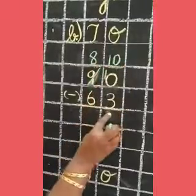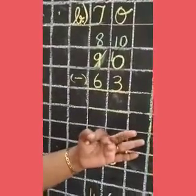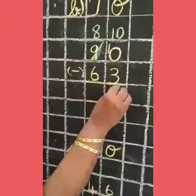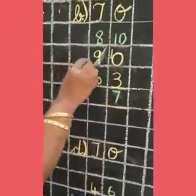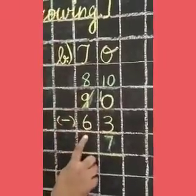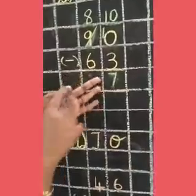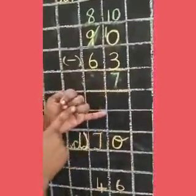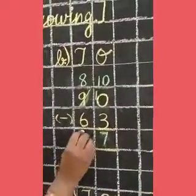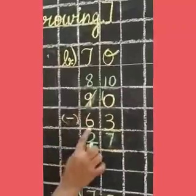10 minus 3. 10 in the mind, 3 in the finger. Before 10: 9, 8, 7. We have 7 in the ones place. Next, 8 minus 6. 8 in the mind, 6 in the finger. Before 8: 7, 6, 5, 4, 3, 2. So 90 minus 63 is equal to 27.